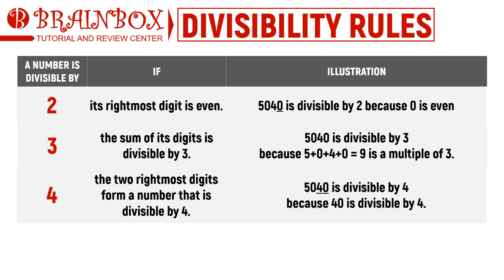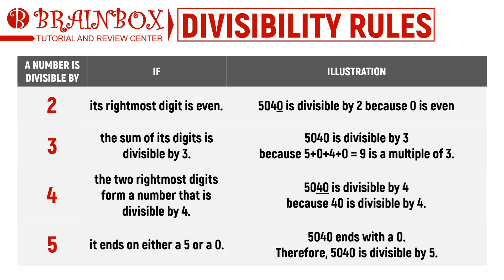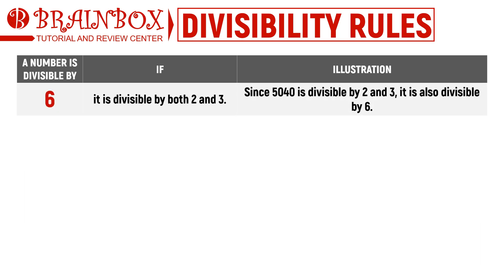Divisibility by 5 is one of the easier ones to check — we simply look at the last digit. Our example, 5040, ends in zero, making it divisible by 5. The divisibility rule for 6 is interesting because it combines two other rules: 2 and 3. We can only conclude a number is divisible by 6 if it satisfies both rules. Since 5040 is divisible by both 2 and 3, it is also divisible by 6.